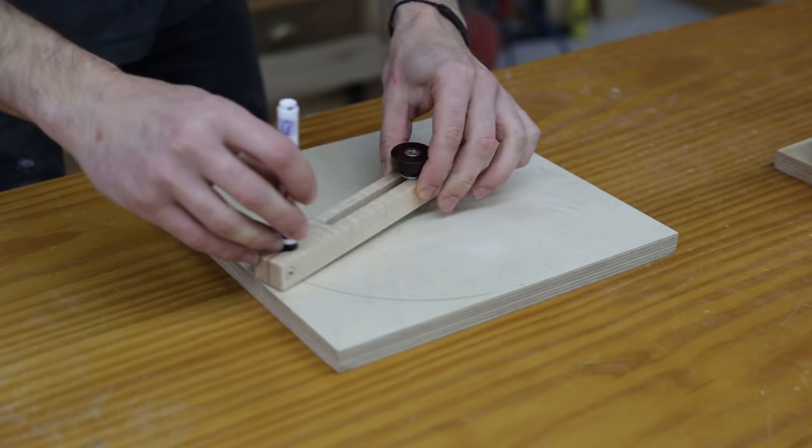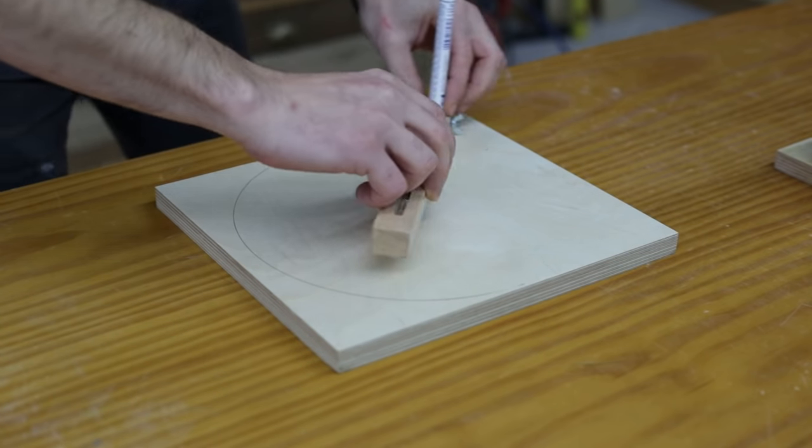Now I'll start working on the disc sander. I mark its circumference on the board and cut it.